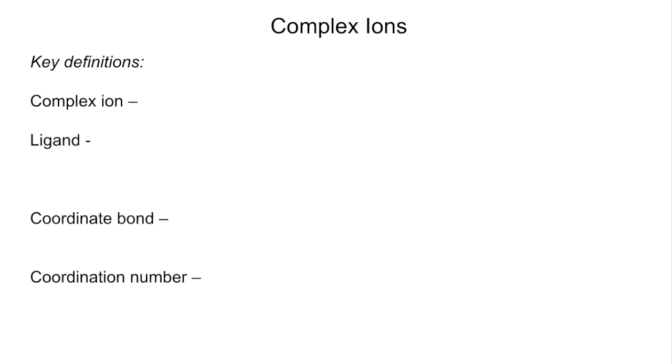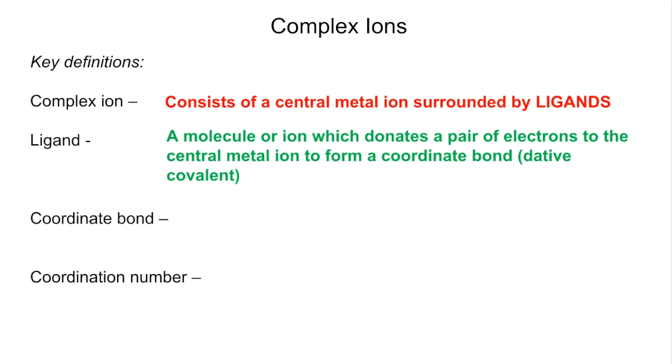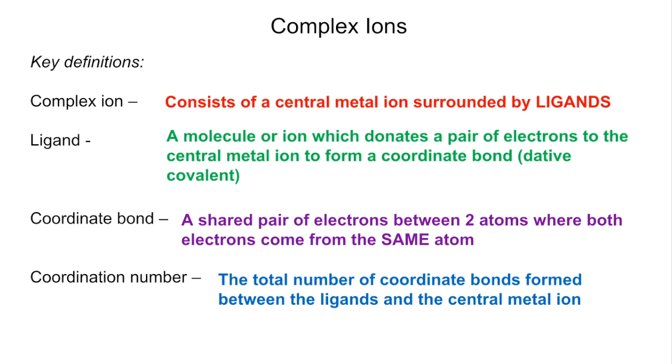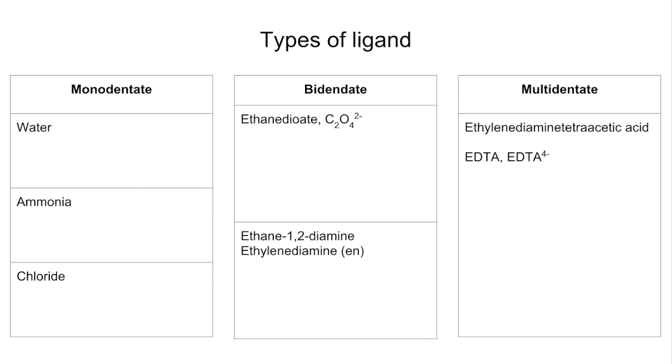Some key definitions now around complex ions. A complex ion consists of a central transition metal ion surrounded by ligands. So what's a ligand? A molecule or ion which donates a pair of electrons to the central metal ion to form a coordinate bond or dative covalent bond. A coordinate bond is a shared pair of electrons between two atoms where both electrons come from the same atom. And finally, the coordination number is the total number of coordinate bonds formed between the ligands and the central metal ion.